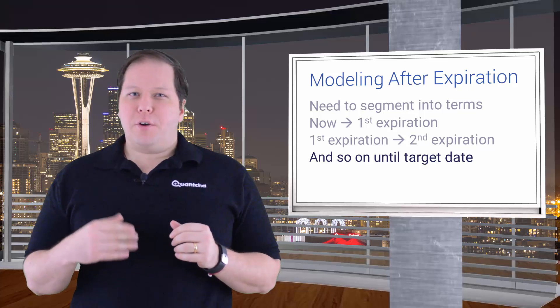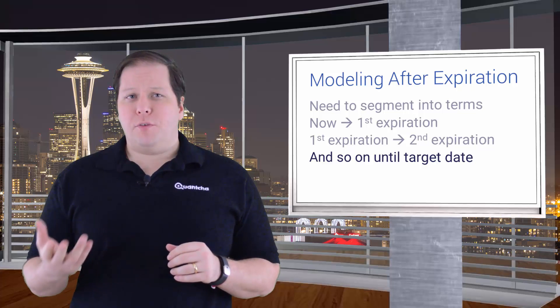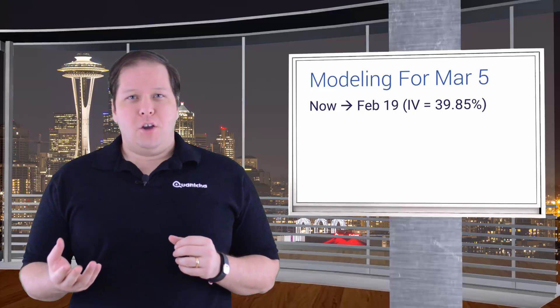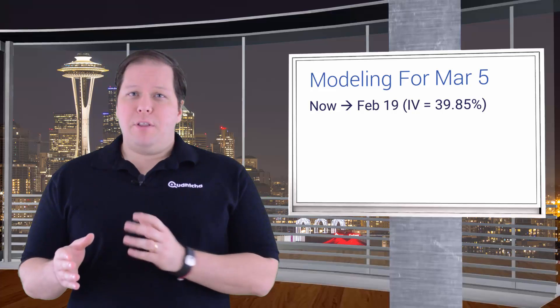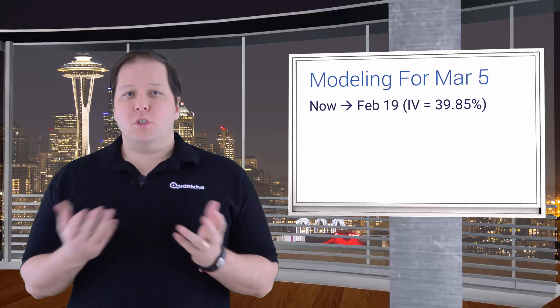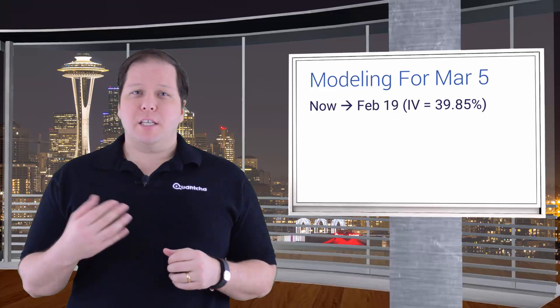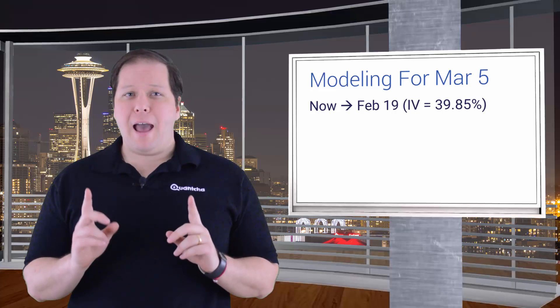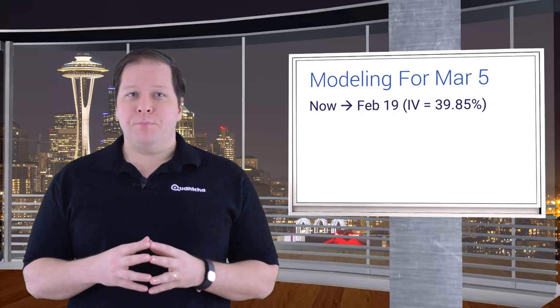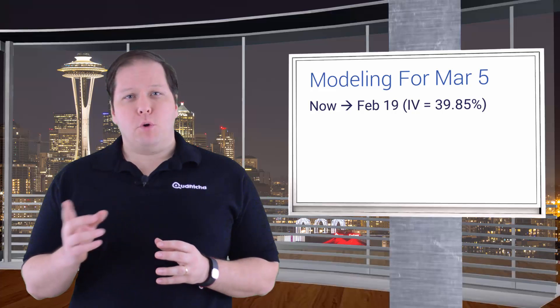Let's say we wanted to evaluate our example book for its likely return by March 5th. Since we have options that expire on February 19th, our first segment would be between now and then, and use the known implied volatility for that period. Once we reach that date, the platform employs an expiration handling strategy to determine how any in-the-money options are to be dealt with, and adjust the book accordingly. We'll cover expiration handling in more depth in another video.